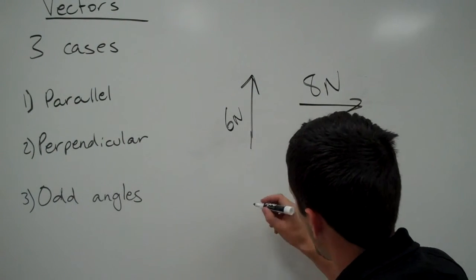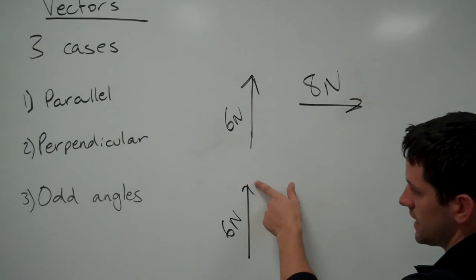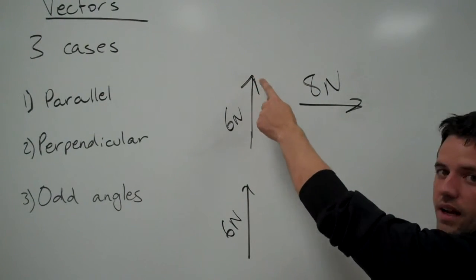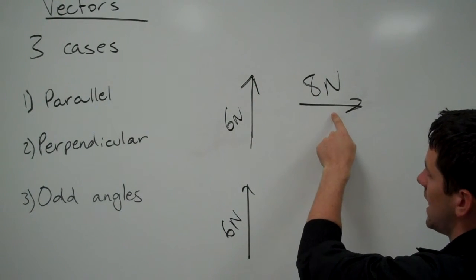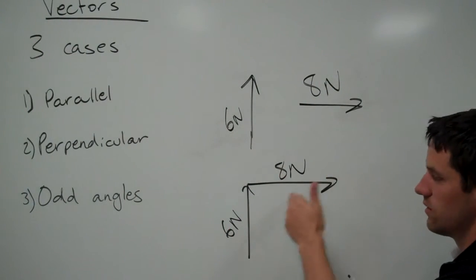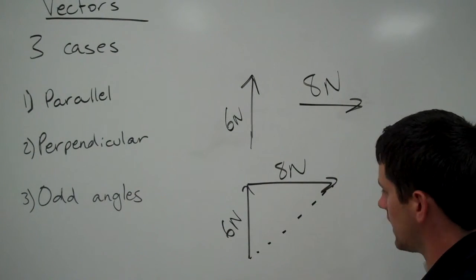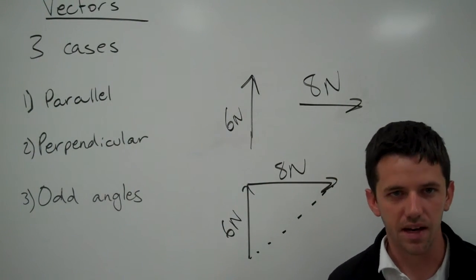And I'll show you what I mean. If I have an up vector that is 6, I'm going to take the tip of that vector, the arrow side, and I'm going to set it up to the tail of the other one. So I set this up tip to tail and now I have a 6 newton vector and an 8 newton vector. I can set it up like a triangle and what I'm trying to find is the hypotenuse.